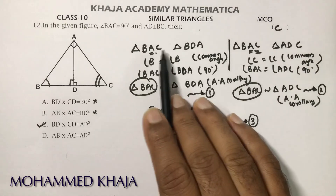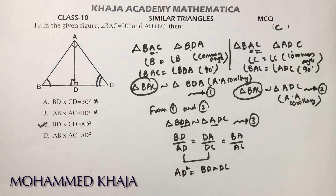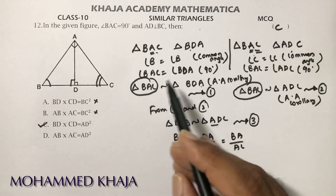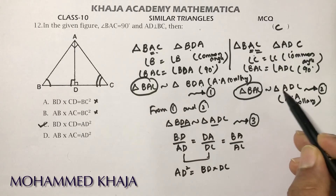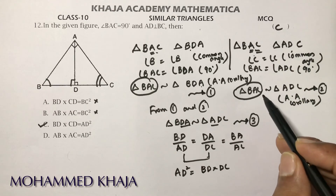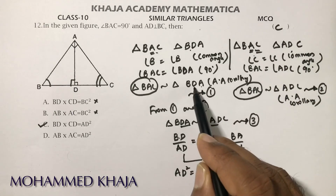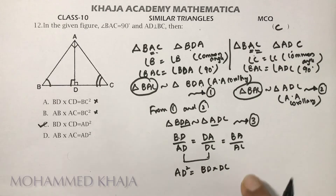In this type of problem, use big triangle–small triangle pairs. From two such cases you get both small triangles similar to each other. Similarly, AB² can be derived because AB is common in one pair, and AC² from another pair. Identify which side is common to find which square you'll get.